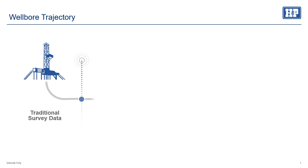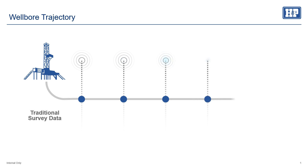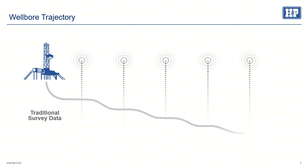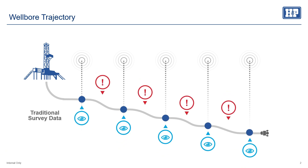In this example, our well's planned inclination is a constant 90 degrees, so this is perfectly lateral. As the well's drilled though, some of those surveys aren't going to match the plan exactly. And in reality, a lot of the data between those surveys also isn't going to match the plan. We can see that even if the surveys we take come up at a perfect 90-degree inclination, the data in between those surveys makes it so that this is not a perfectly lateral well.